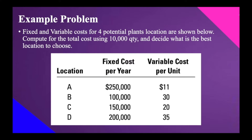Let's have an example problem. Fixed cost and variable cost for four location plans are shown. Compute for the total cost using a 10,000 quantity and decide what is the best location. We have four locations A, B, C, and D. Fixed costs per year are $50,000, $100,000, $150,000, and $200,000. Variable cost per unit is $11, $30, $20, and $35. We should decide what location to choose based on these figures.